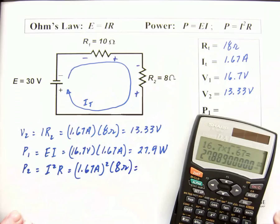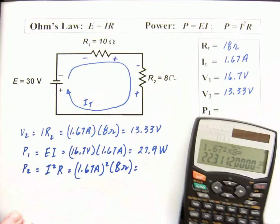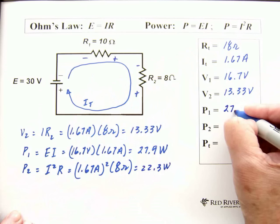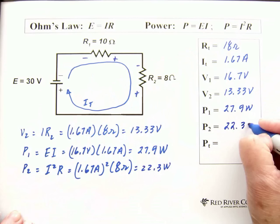So, we have 1.67 squared times 8 equals 22.3. Let's go with 22.3 watts. 22.3 watts. So, here we have for power 1, 27.9 watts. And for power 2, 22.3 watts.